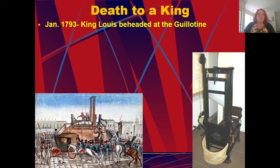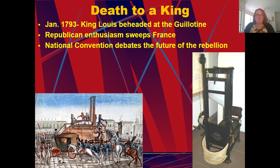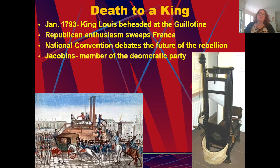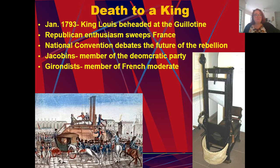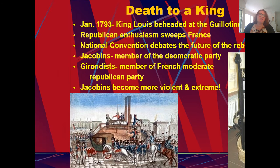In January of 1793, Louis XVI is beheaded by guillotine. Republican enthusiasm sweeps throughout all of France. The national convention debates the future of the rebellion — you had Jacobins, members of the Democratic Party, on one side, and the Girondists, members of the French moderate Republican Party, on the other. Shockingly, the Jacobins were the ones who were more violent and more extreme.